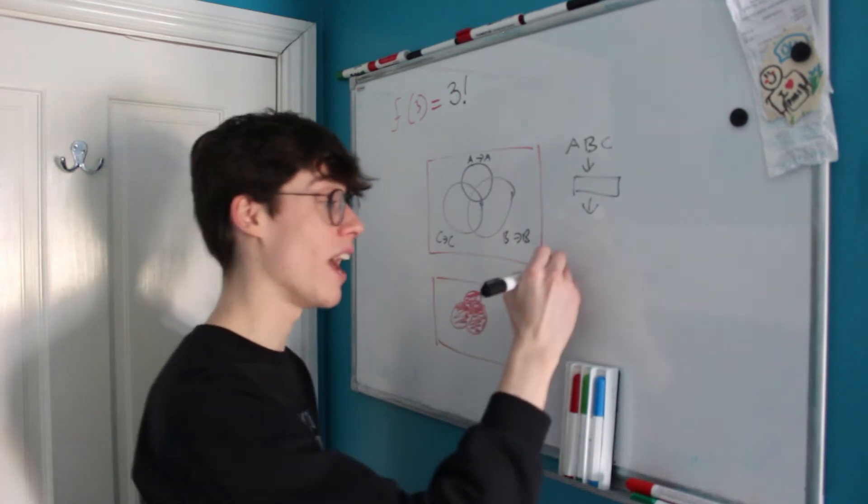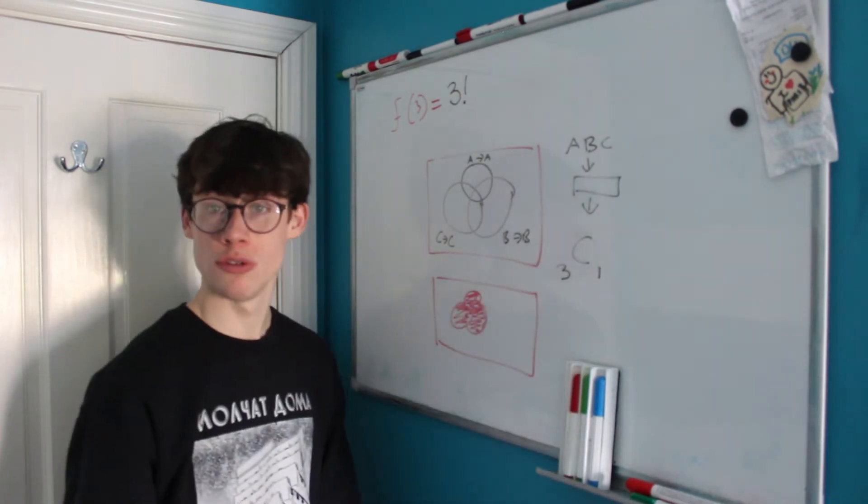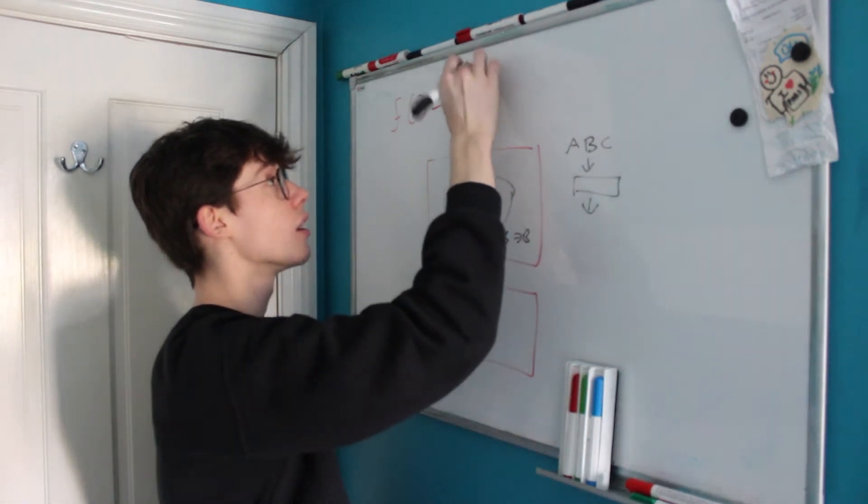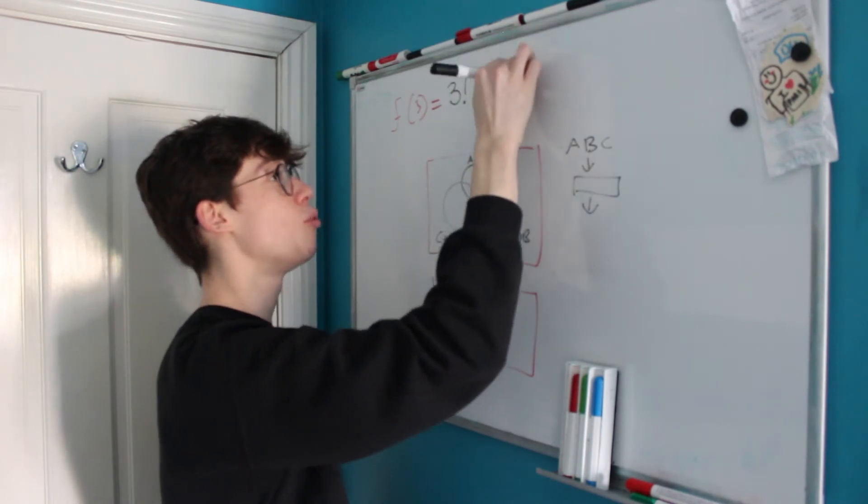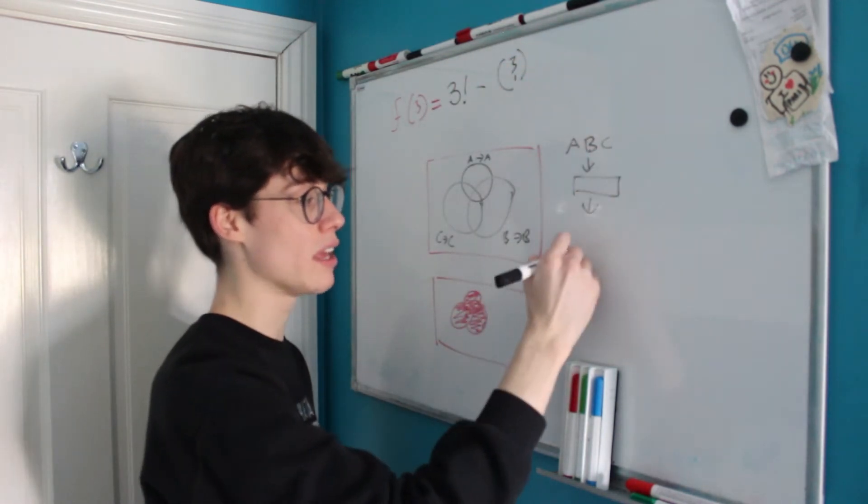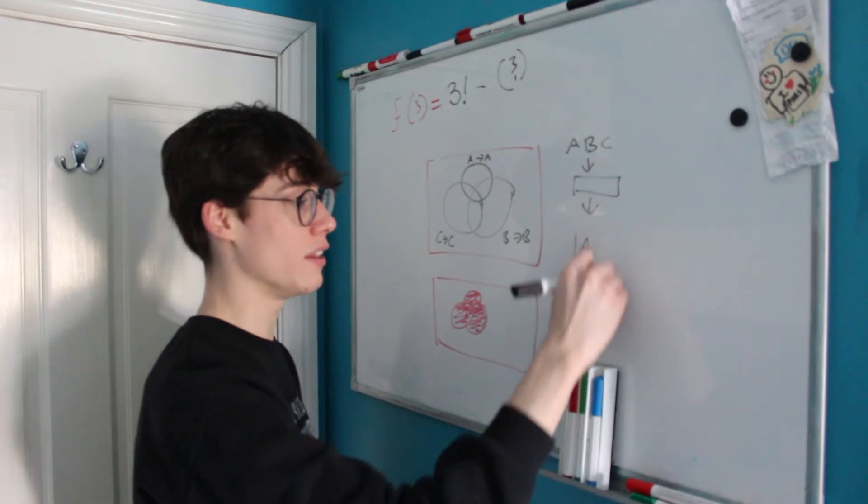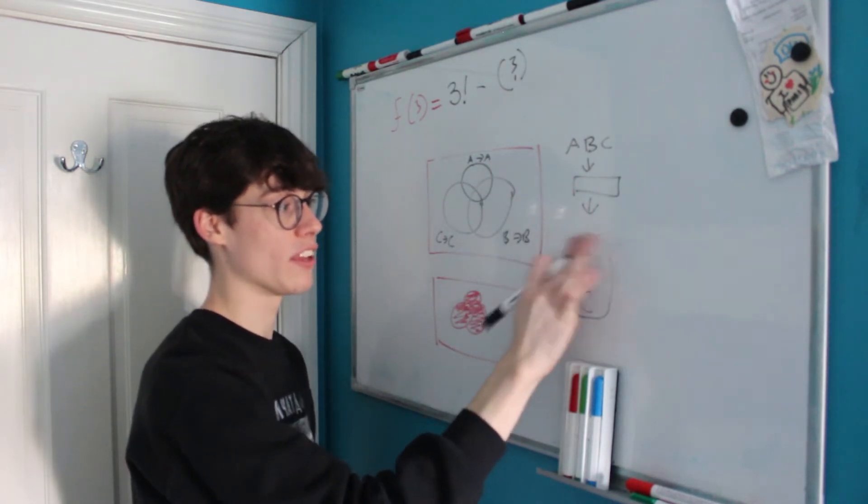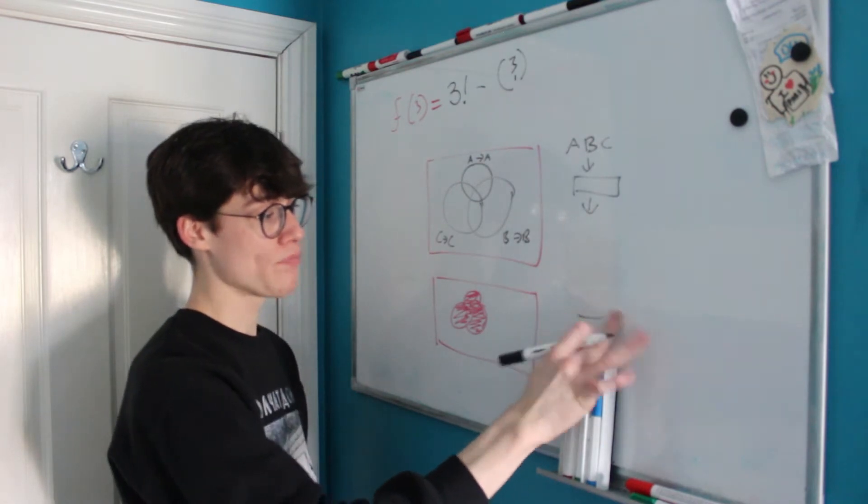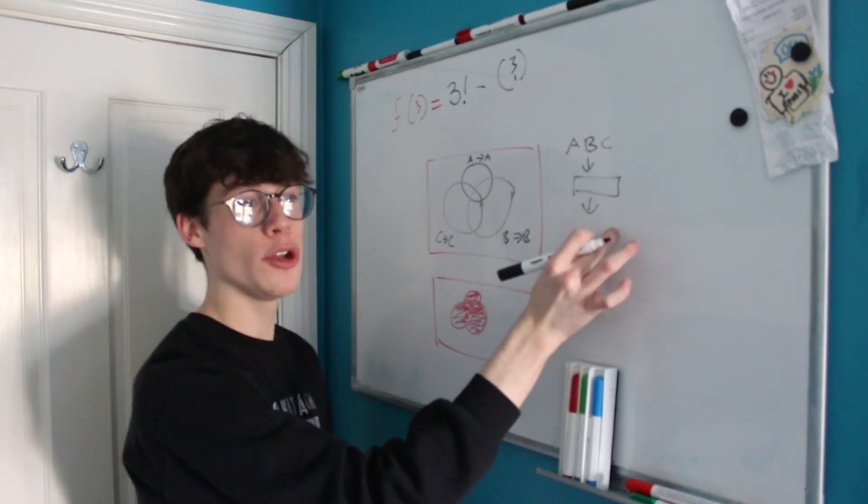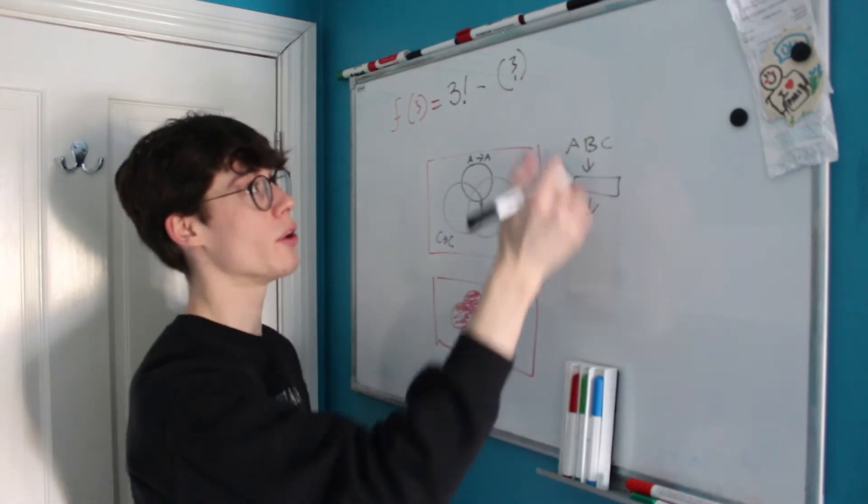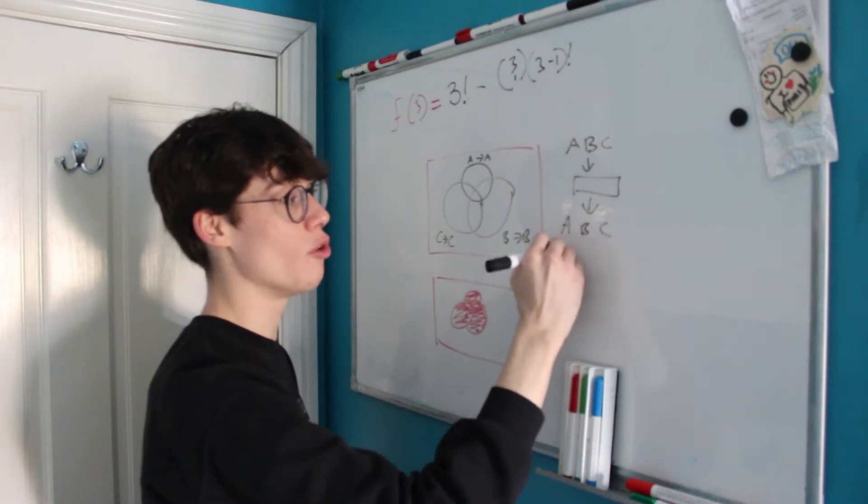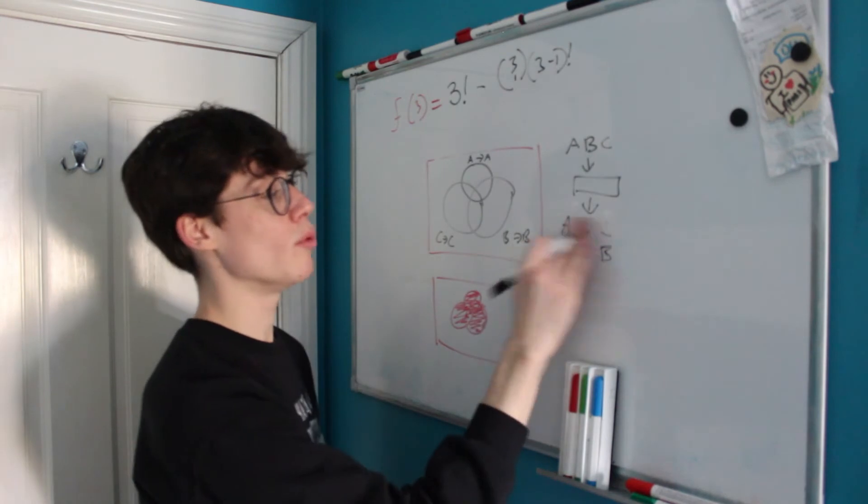In each one of these cases we're having one of the letters fixed which means that we're choosing one letter from three total letters and that informs us that we're going to be using the choose function. So we've got a coefficient of 3 choose 1 and once we've fixed one letter in place there's two letters that we can arrange as we like and that's going to be 3 minus 1 factorial.